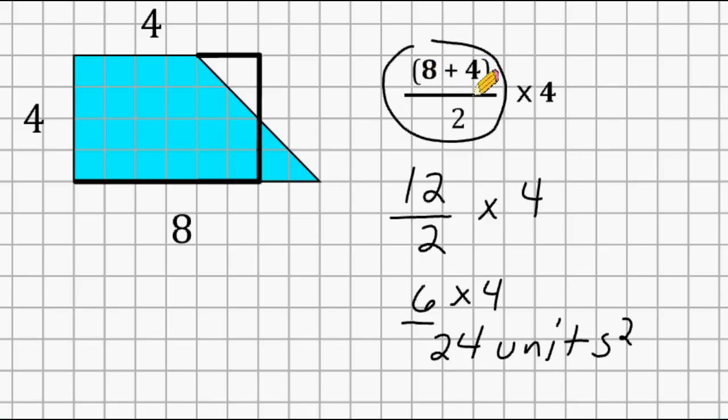So by adding 8 and 4 and then dividing by 2, what we did is we effectively turned this trapezoid into a rectangle. So we're kind of pretending that this 8 is a 6 and this 4 right here is a 6. So what we really have is a rectangle that is a 4 by 6 rectangle, which is an area of 24 square units.